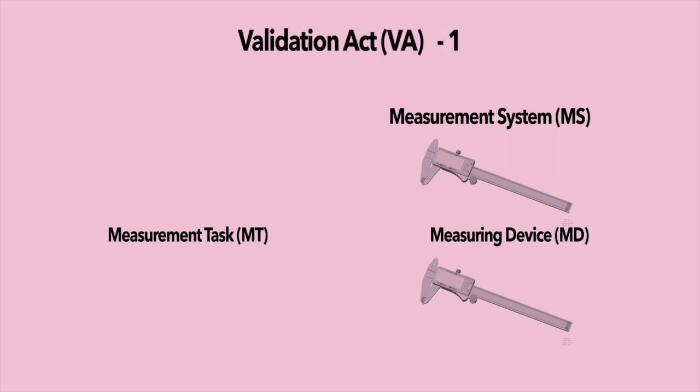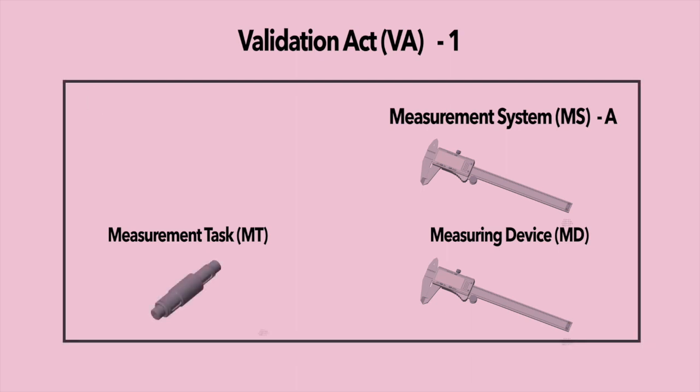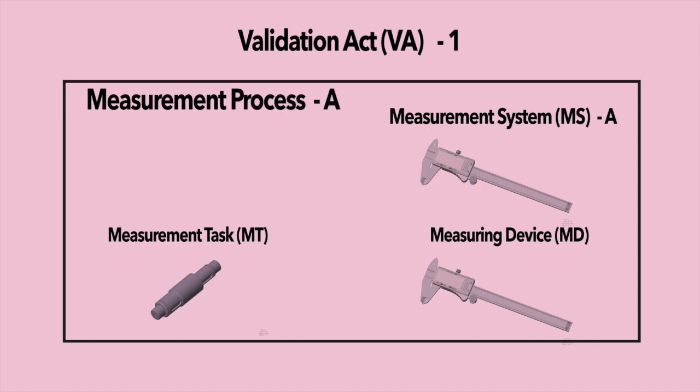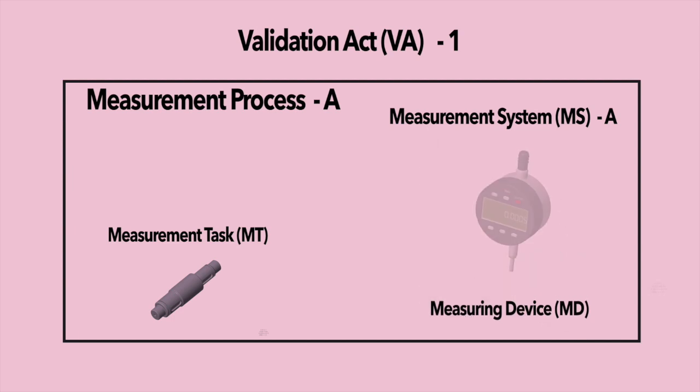And finally, the validation act validates the capability of a particular measurement system for the given measurement task under a specific measurement process. Typically, the shaft is measured on the shop floor with one measurement system and in the lab with another. Although the measurement task is the same, the measurement systems differ, requiring separate validation acts.